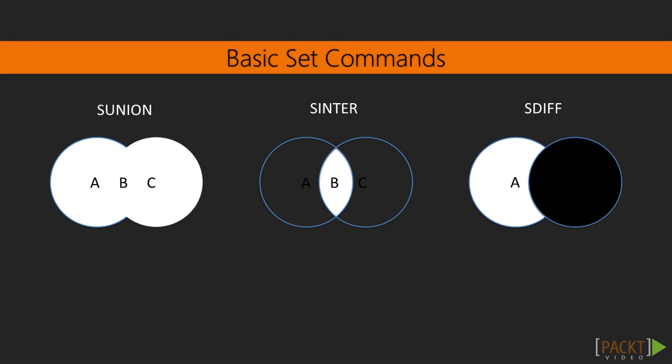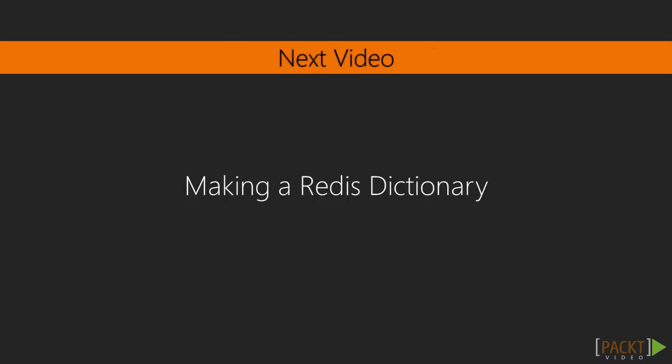As you can see, I've included some nifty Venn diagram graphics that show you how they work. Of course, there are many more set commands which you can see in the Redis documentation, but this gives you a good idea of how sets can be used. So let's put our newfound set knowledge to work — in the next video, we're going to import a dictionary of words into Redis.